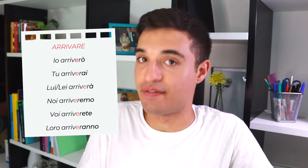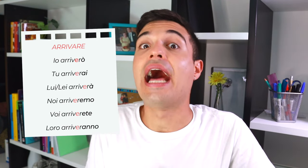With -are verbs, you need to do two things before adding the endings. First, of course, remove the final -i. So for example, if I have the verb arrivare, I would be left with arrivar-. But then I have to change the -a of -are into -i, so instead of arrivar- I say arriver-. Then I add the endings of the future: arriverò, arriverai, arriverà, arriveremo, arriverete, arriveranno. It's pretty easy!